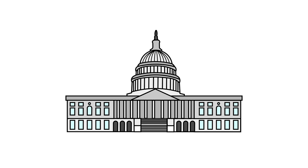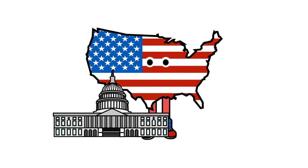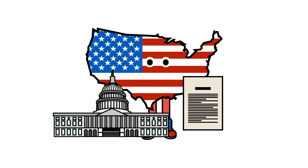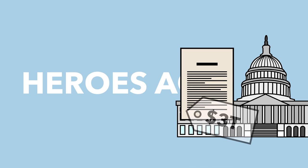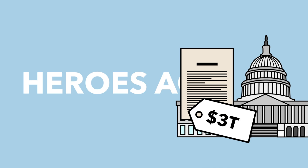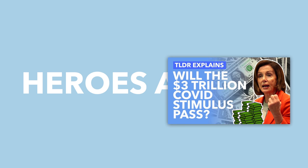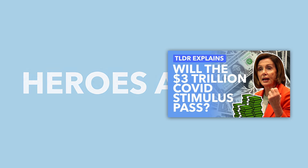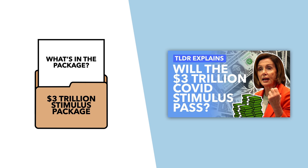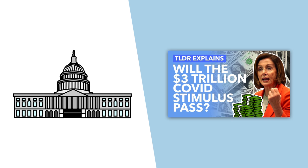Sometimes it's difficult to understand why Congress can't get more done, so in this video we're going to take a look at the system of government in the US, how laws are made and how they can be challenged and overturned. If you're interested specifically in that three trillion dollar stimulus package, you can check out the video we made on the topic, where we explain what's in the package, as well as how likely it is to actually make it through Congress. There's a link to that video in the description.